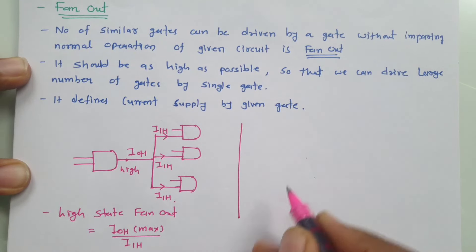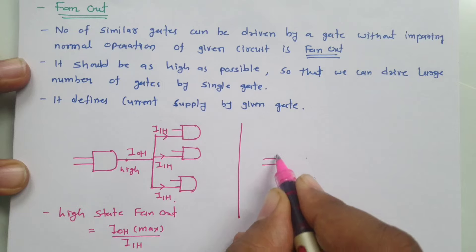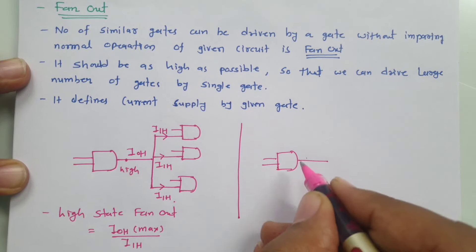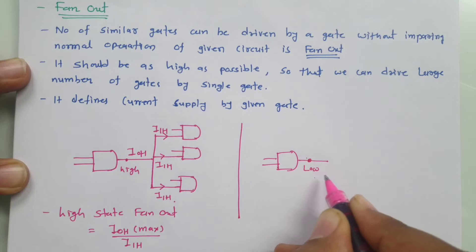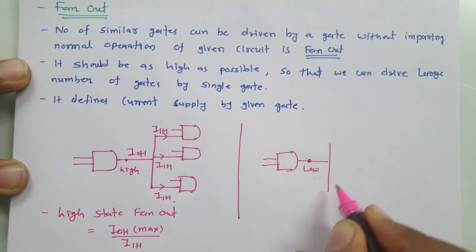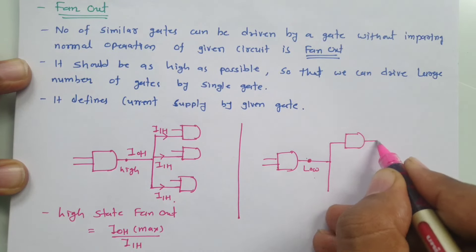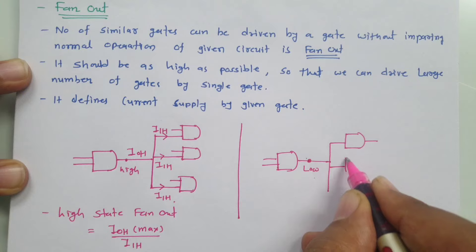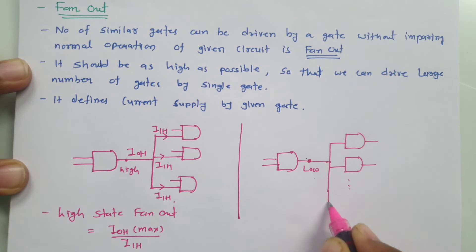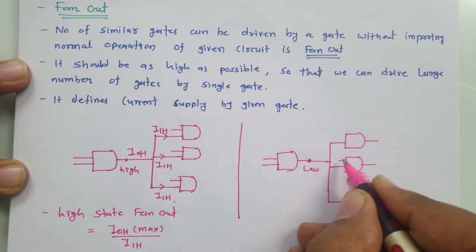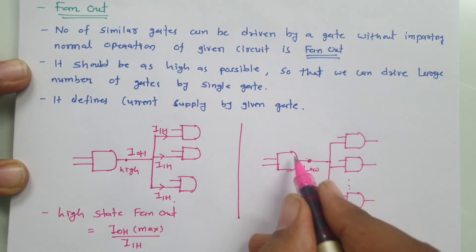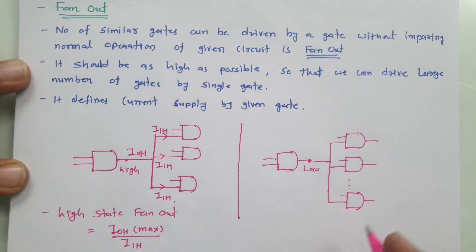Now, similarly for logic low, we can define fan-out where here we have AND gate and if my output logic is there at logic low, then if this output of AND gate is connected to number of AND gates which is functioning properly as per the logical operation, then here we can say number of logic gates driven by this AND gate is referred as fan-out.